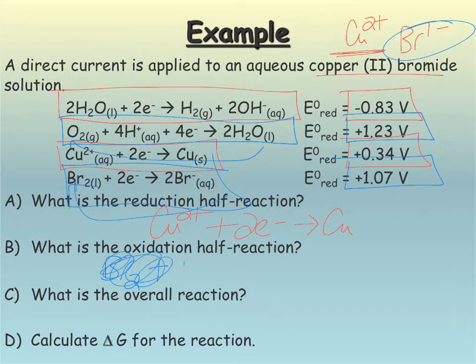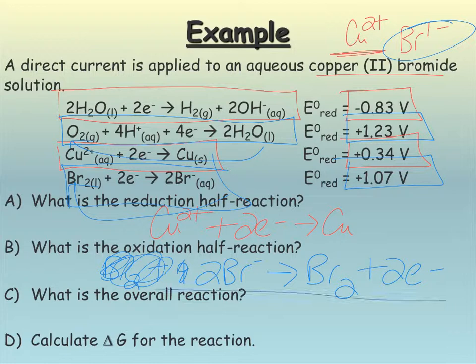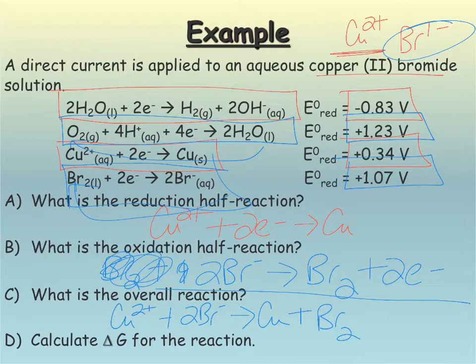Okay, so, and you do need to flip it when you write the half reaction. So 2 Br minus makes Br2 plus 2 electrons. Okay. All right. So if I wrote the overall reaction, I would get Cu2 plus plus 2 Br minuses makes copper and bromine liquid.